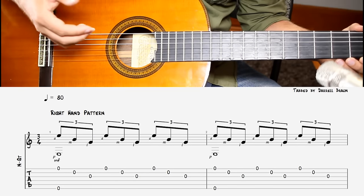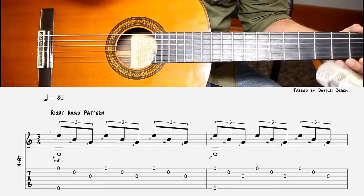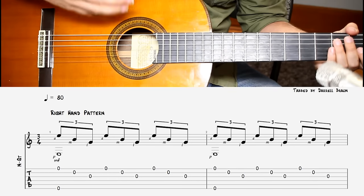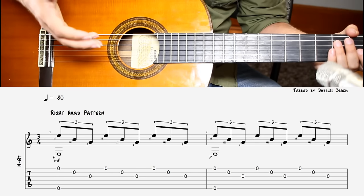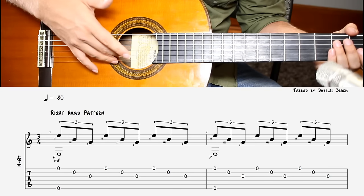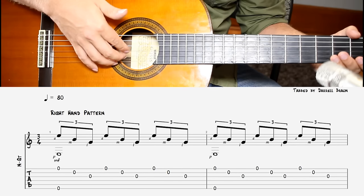So before we launch into playing the piece, what we need to do is look at the right hand pattern. If you've never played fingerstyle guitar before, this is a great piece to start off with because of the relatively simple right hand pattern. So your ring finger is going to get anchored to first string, so it's only ever going to play first. Your middle finger is going to get anchored to second string, and your index finger is going to get anchored to third string.